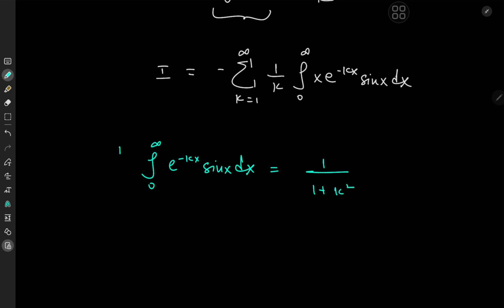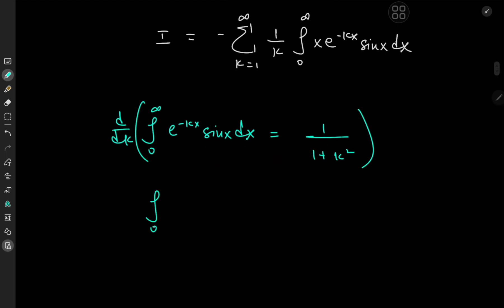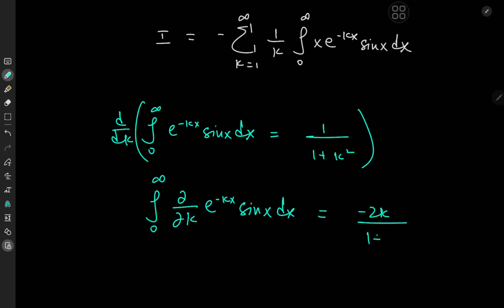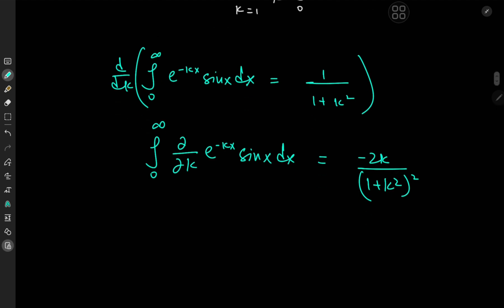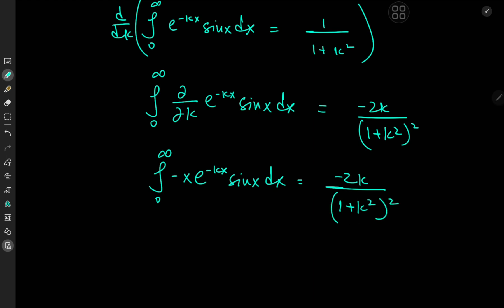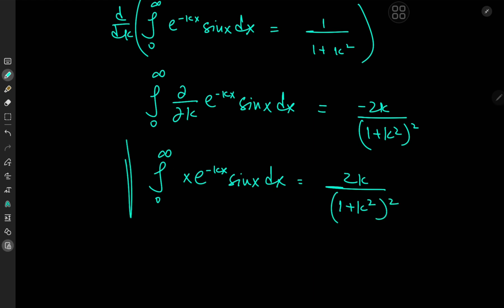What we need to do is differentiate this with respect to k. On the left, we get the integral from 0 to infinity of the partial derivative with respect to k of e to the negative kx times sine(x) dx, and on the right we have negative 2k over (1 plus k squared) squared. Differentiating gives us the integral from 0 to infinity of e to the negative kx times negative x times sine(x) dx equal to negative 2k over (1 plus k squared) squared. The negative signs cancel out and we have a really nice integration result.